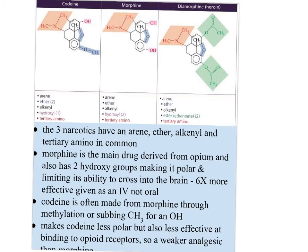What makes them different is their side chains or substituents. Morphine, the one in the middle, is the main drug derived from opium and has two hydroxyl groups, making it polar and limiting its ability to cross into the brain. It's six times more effective given as an IV rather than orally, but even intravenously it has issues getting into the brain. Codeine is made from morphine through methylation — substituting a CH₃ group for one of the OH groups — making codeine less polar so it can cross into the brain a little better, but it's also less effective at binding to the opiate receptors.